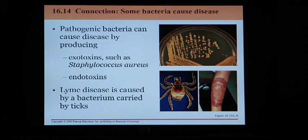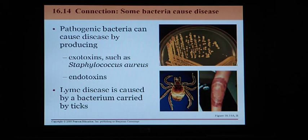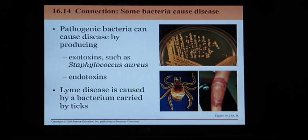Then we have endotoxins — toxins embedded within the cell wall of the bacteria. If we ingest the bacteria, we can become very sick. An example is Salmonella, commonly found in poultry meat. We can also get Salmonella from handling reptiles such as turtles, snakes, and lizards, as they carry it as well.